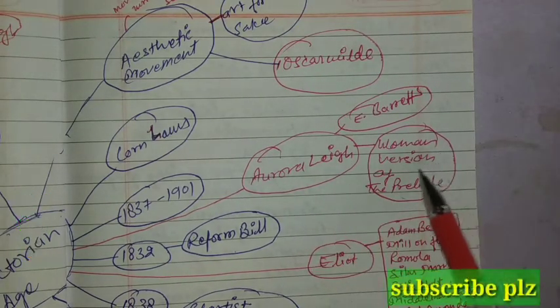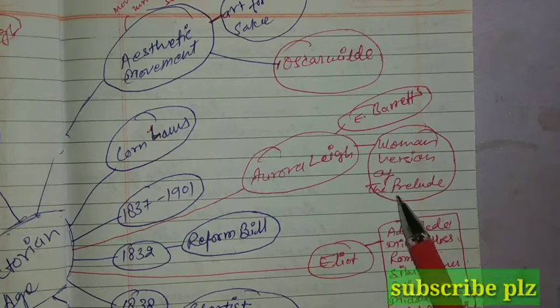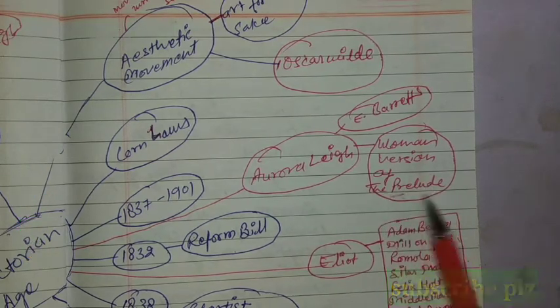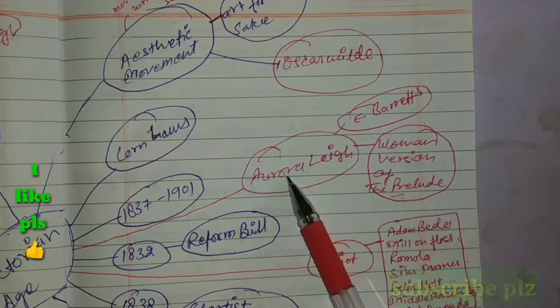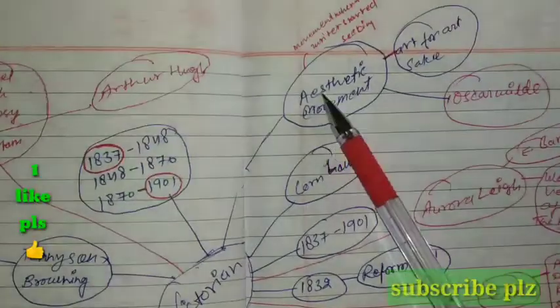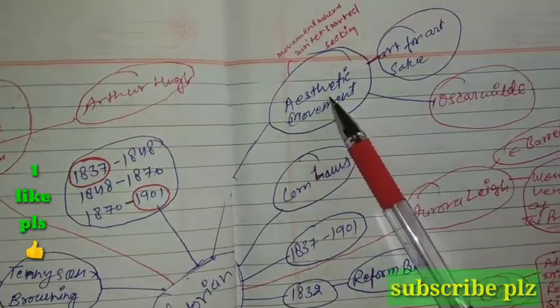Next is an important work by Elizabeth Barrett Browning. Aurora Leigh is the work, and it is called the women's version of Paradise Lost. So Aurora Leigh is called the women's version of Paradise Lost.